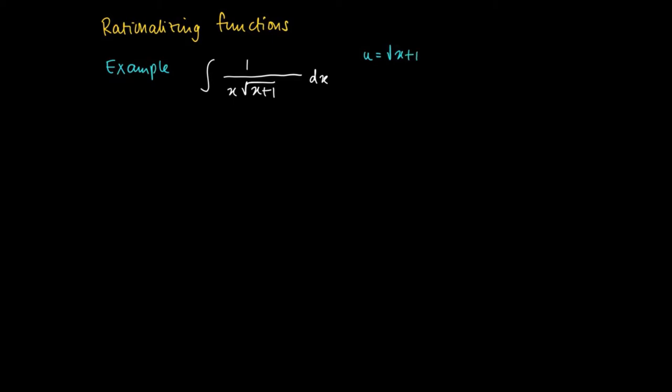What do we mean by that? We choose the right substitution, like here, u equals the square root of x plus 1, so that du can be expressed like this. Then if we carry out this substitution, what we end up with is an integral in u, which is an integral of a rational function.